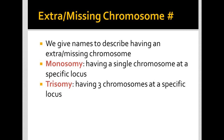In our last video, we talked about what non-disjunction was. Now I'm going to talk to you about some of the results that you might see of non-disjunction. In non-disjunction, you get either an extra chromosome or a missing chromosome. Because this is biology, we can actually give names to these conditions to describe someone having an extra or a missing chromosome.